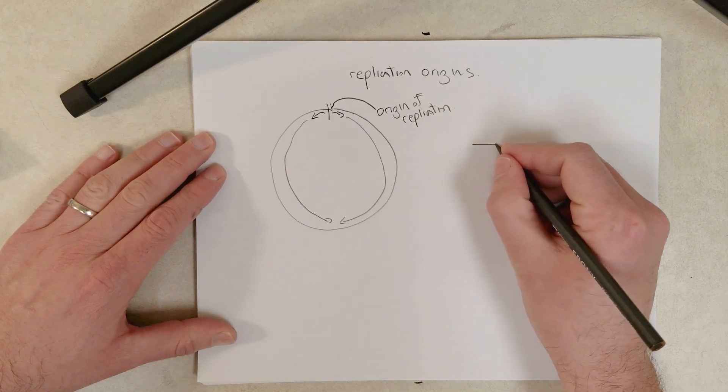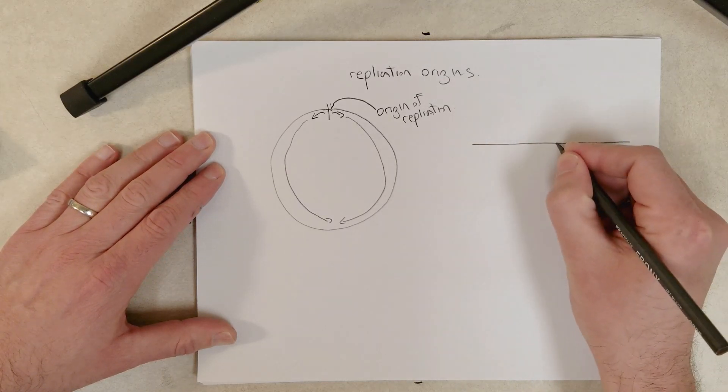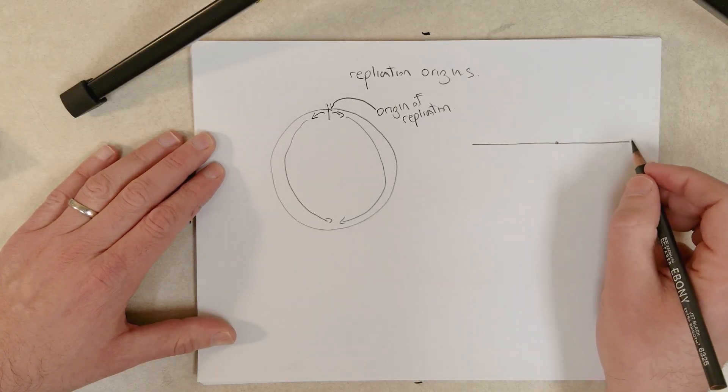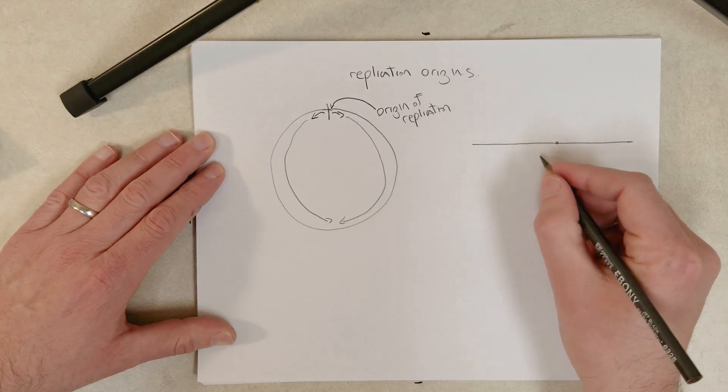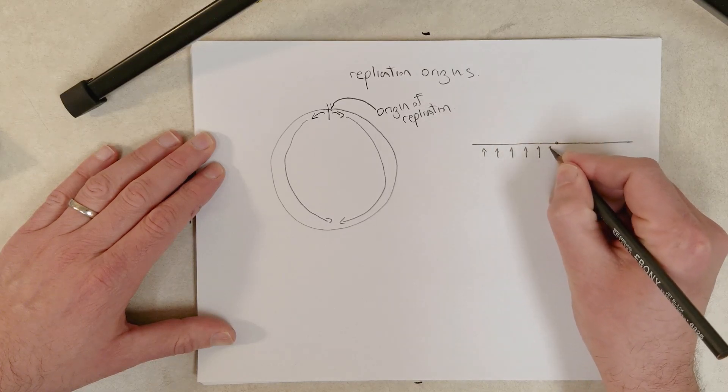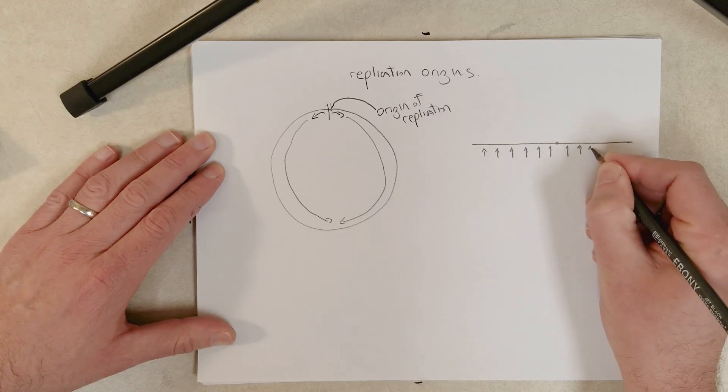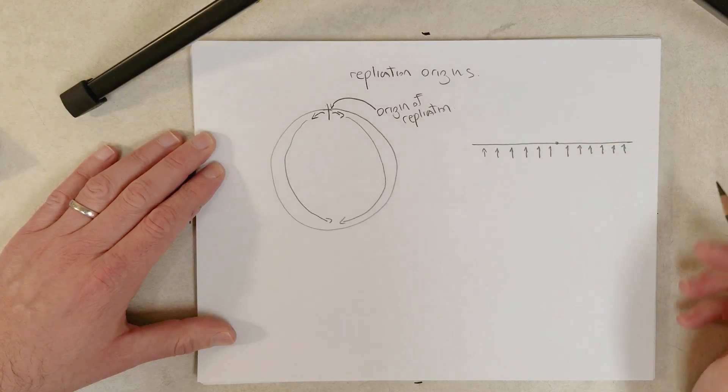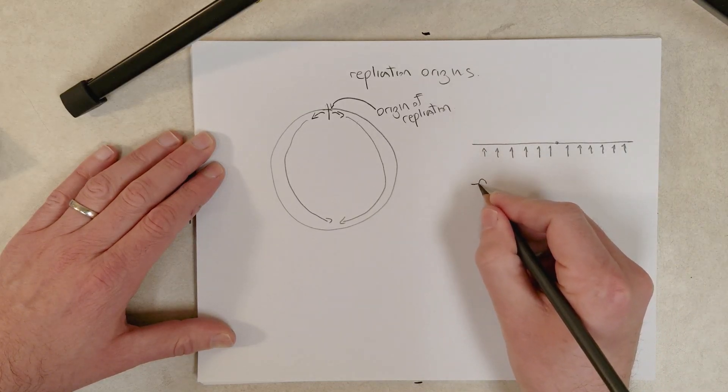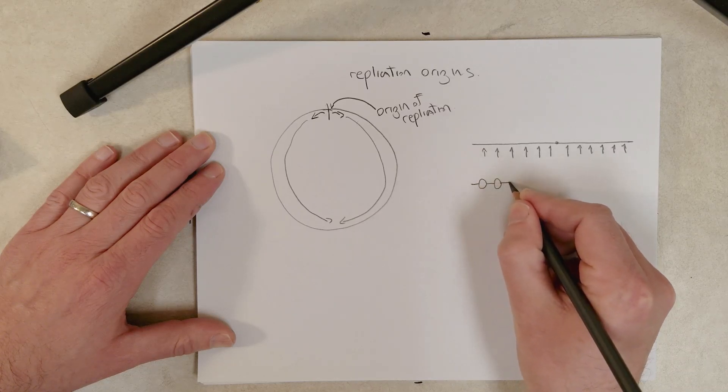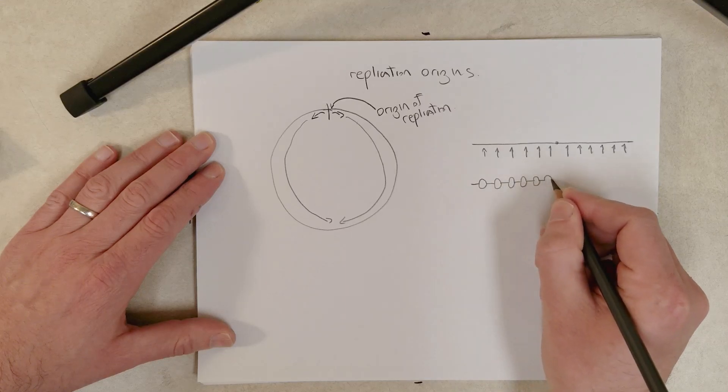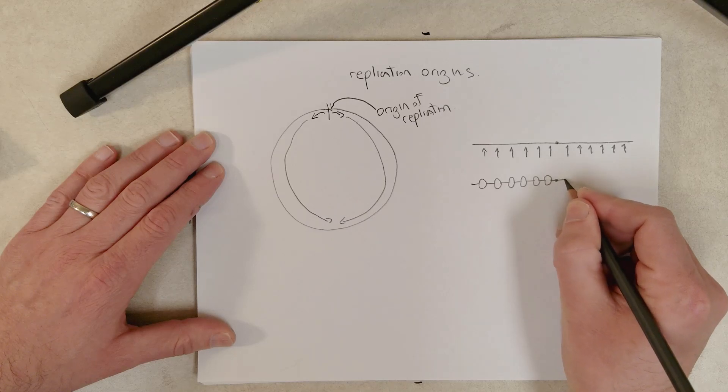Eukaryotes, however, tend to have many origins of replication along the chromosomes. So if this is one of the chromosomes, let's say in humans, now we can say that there are many replication origins. And replication is initiated from each of the origins. So we'll have lots of replication bubbles. And replication will occur bidirectionally from each origin.